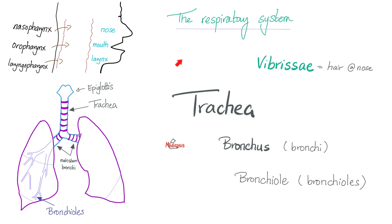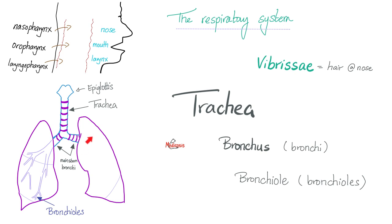Let's go back to square one. We had air here; we're breathing air in. We go from nose to pharynx, or mouth to pharynx. Then you will go to the laryngopharynx, and then into the larynx, which is covered by the epiglottis. Down goes the trachea, and then the trachea is going to divide into right and left main stem bronchi. Here is the right main stem bronchus, and here is the left main stem bronchus.